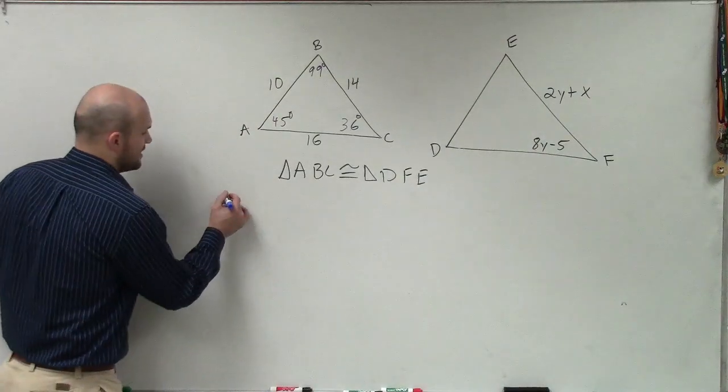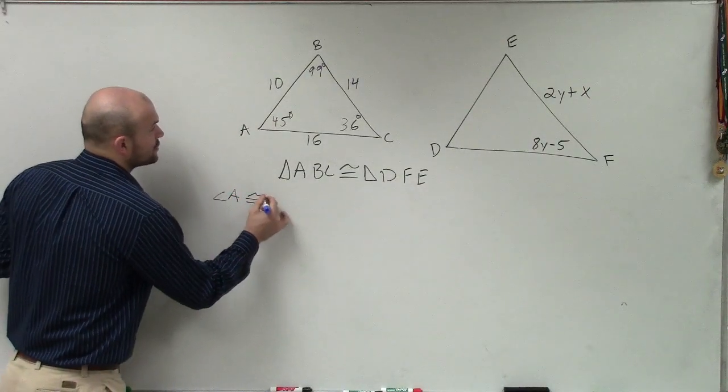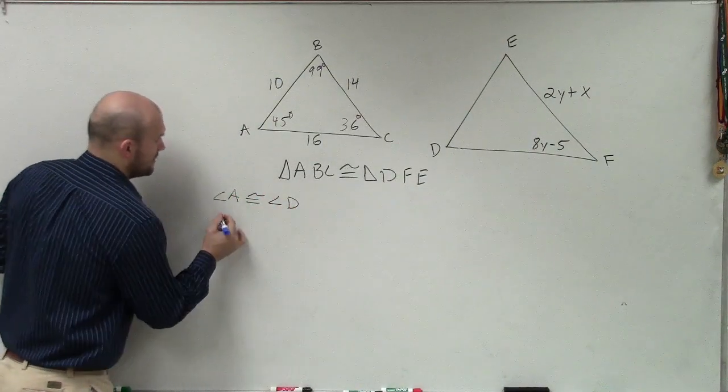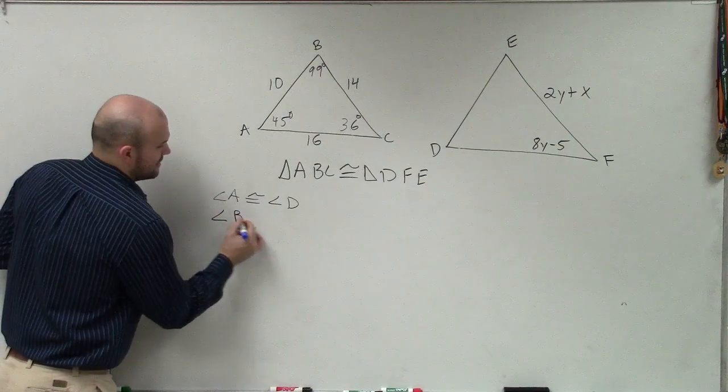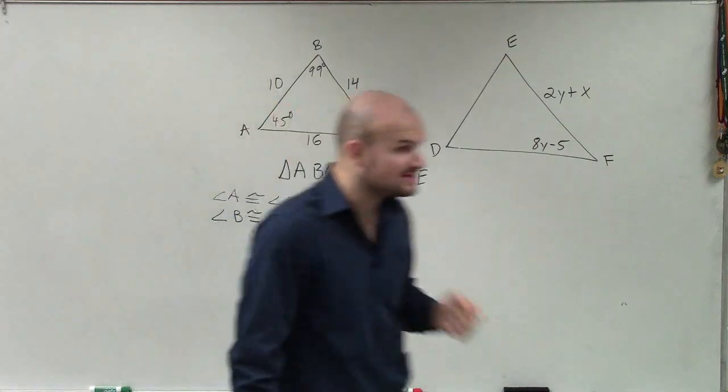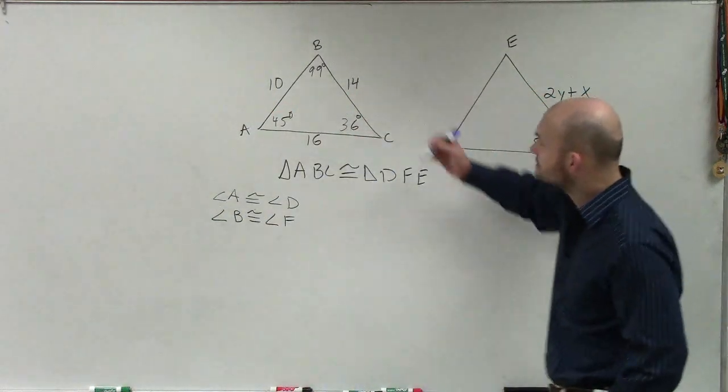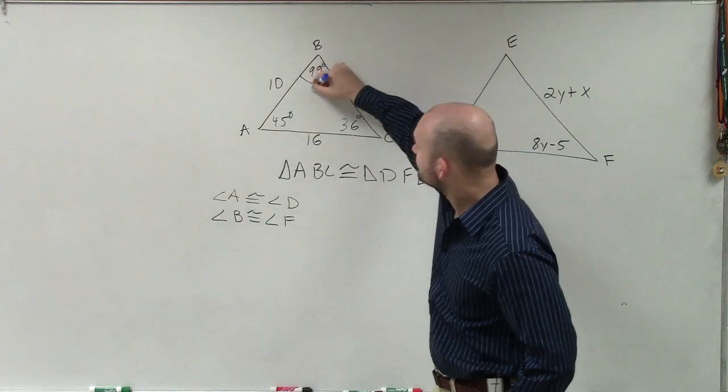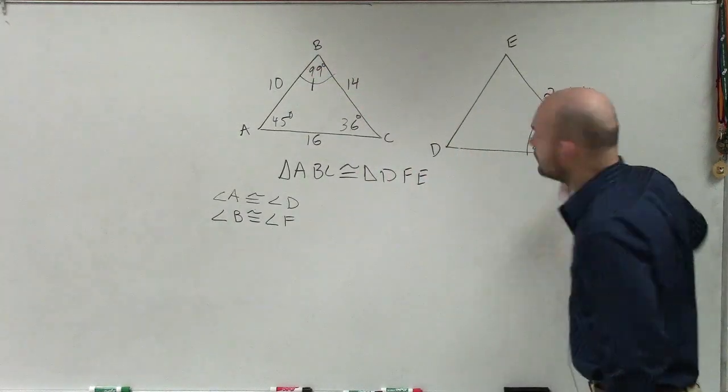So what that means is angle A is congruent to angle D. Angle B is congruent to angle F. And that's very, very important. What you guys need to understand is this angle B is congruent to this angle F.